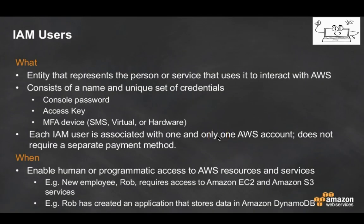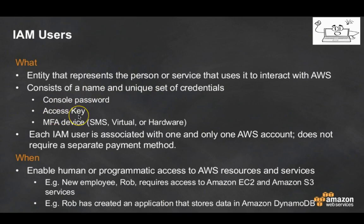Now we will discuss IAM components. First are IAM users. Users are entities that represent a person or service used to interact with AWS. IAM users consist of a name and a unique set of credentials. Credentials can be a console password, access keys used in SDK libraries, or an MFA device such as a hardware or virtual device.